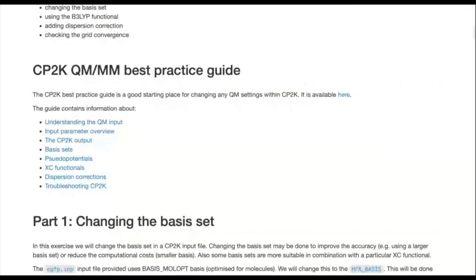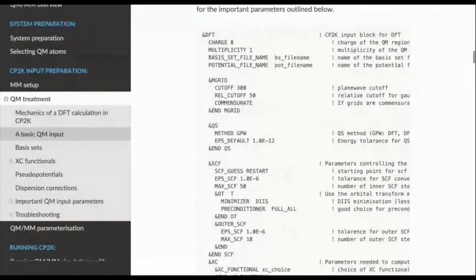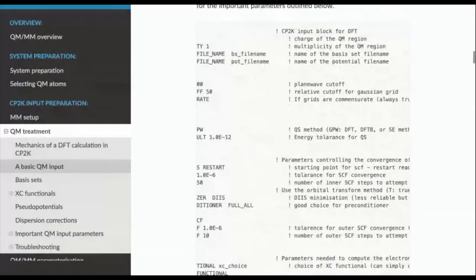I'm going to start off by covering a bit about the CP2K best practice guide. This is something we've put together to cover QM/MM simulations within CP2K — it was put together for using standalone CP2K with QM/MM, but a lot of it is relevant to using it in combination with GROMACS. Here is some information you can find within the guide, with links to sections particularly relevant when using it with GROMACS. For example, if you want to understand the QM part, there's a section covering the QM input with descriptions of all the different parameters you might have and why you might choose them.